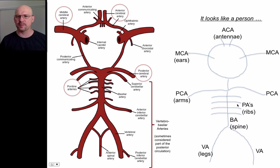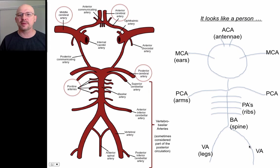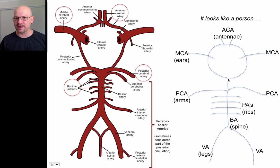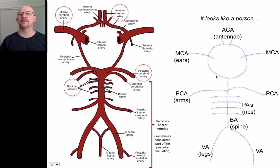The vertebral arteries also help feed the brainstem. Now, the PCA is the posterior cerebral artery, but when we talk about the vertebral and basilar arteries, that whole section is sometimes considered part of the posterior circulation as well. So from the circle of Willis down — the pontine arteries, basilar arteries, and vertebral arteries — all of that is called the posterior territory of circulation. But don't mistake all of that being posterior with the posterior cerebral artery specifically.